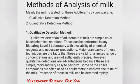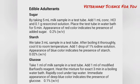Detection of edible adulterants: detection of sugar — take 5 ml milk sample in a test tube, add 1 ml concentrated HCl and 0.1 gram resorcinol solution, and place the test tube in water for five minutes. Appearance of red color indicates the presence of added sugar.